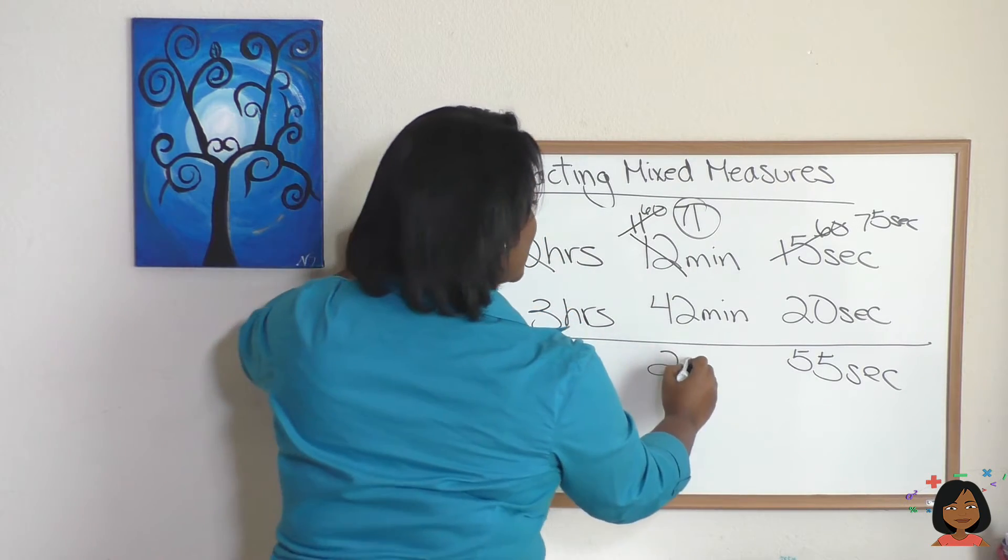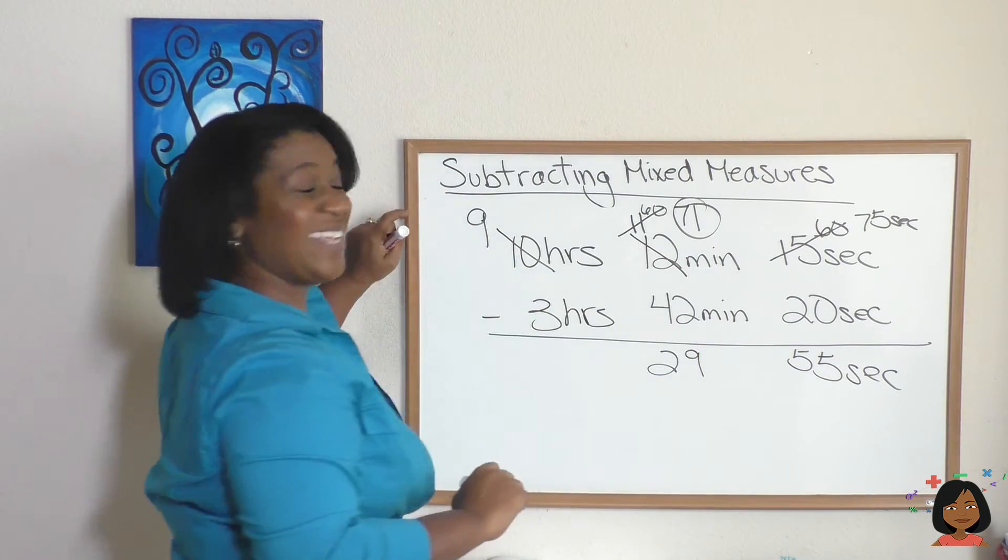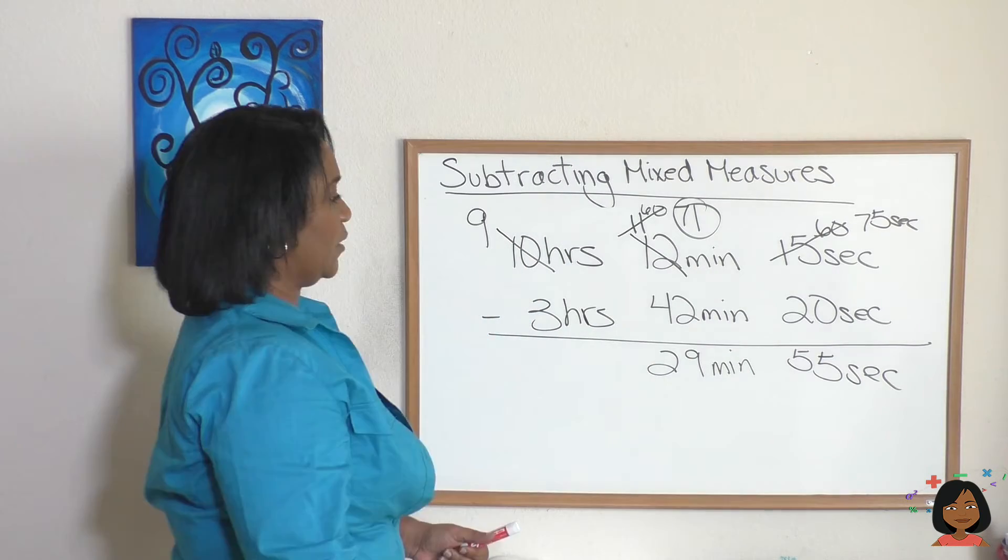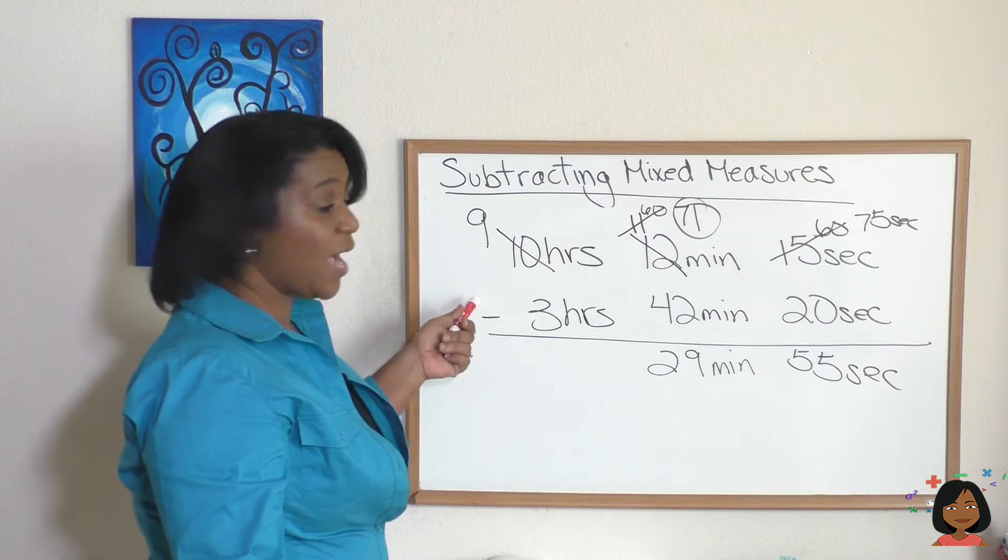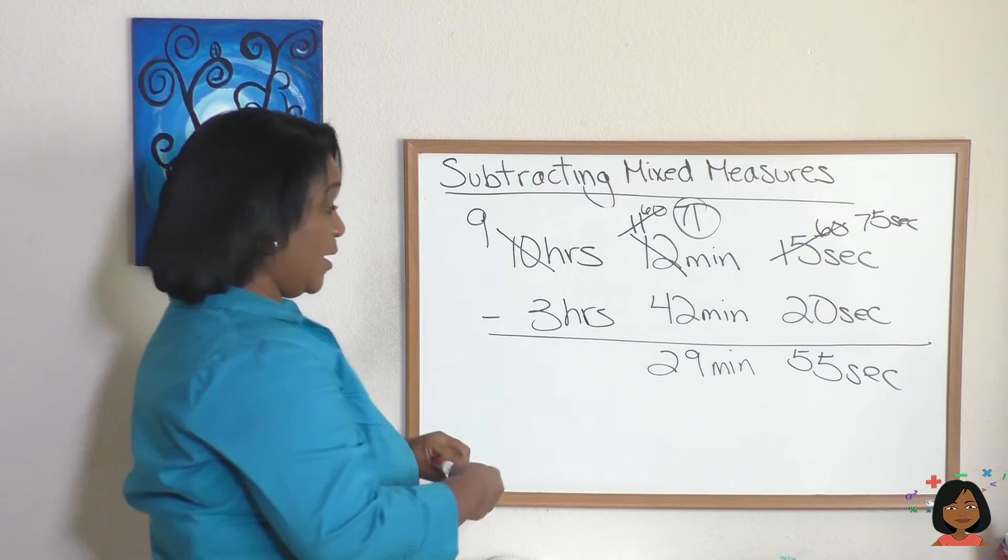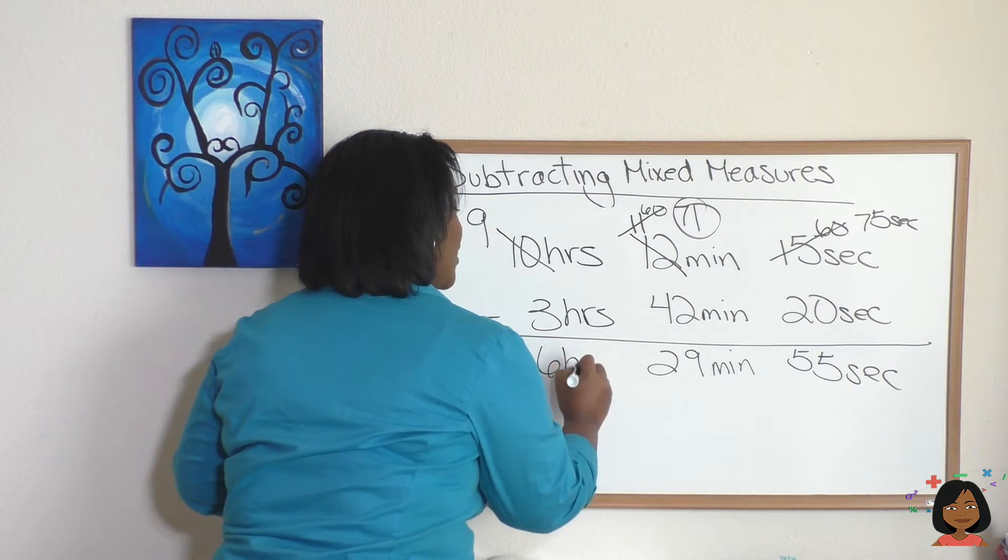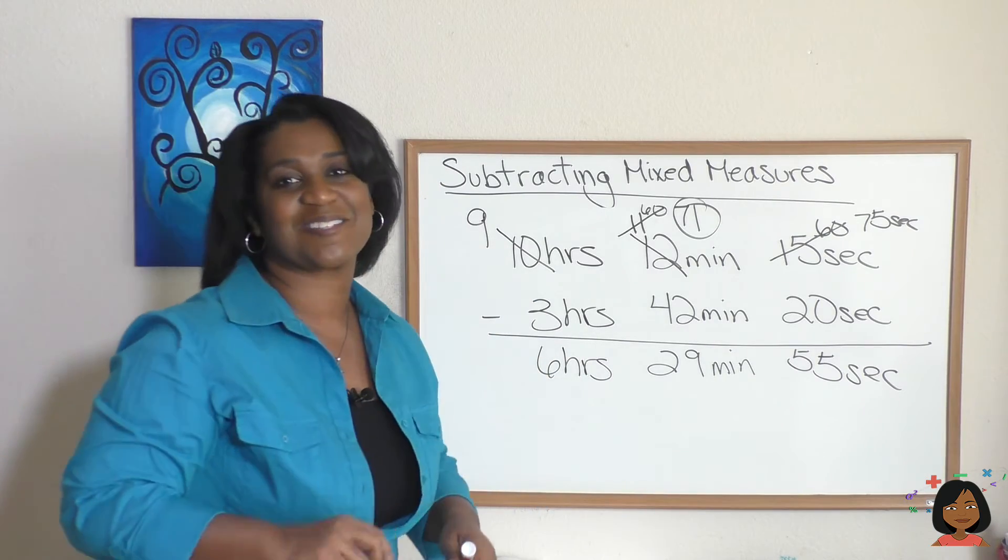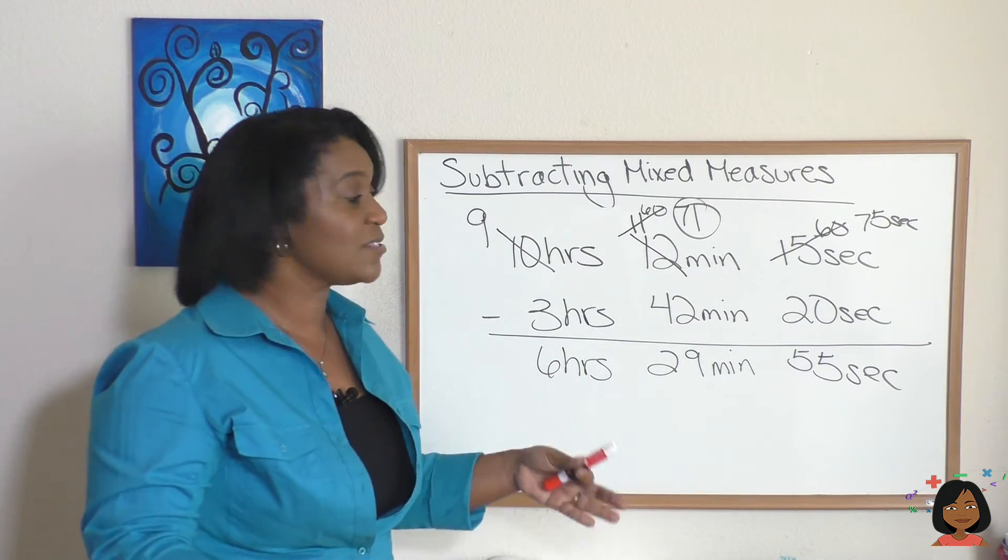Now let's handle the hours. 9 minus 3 is 6, so our answer is 6 hours 29 minutes 55 seconds. So you see the process is you look to see if you can subtract. If you can't, regroup.